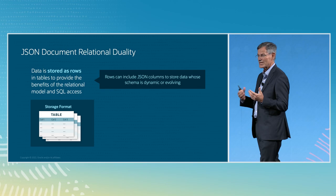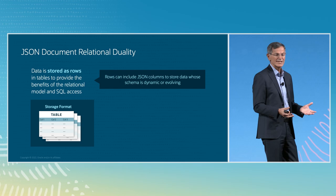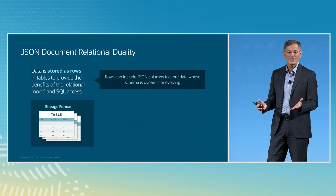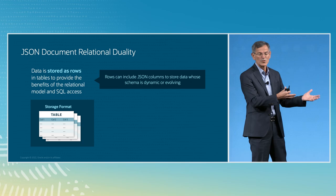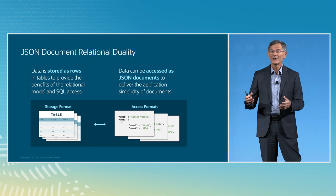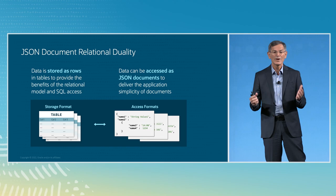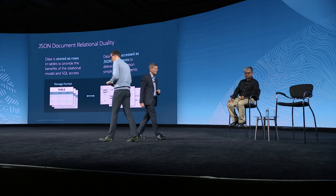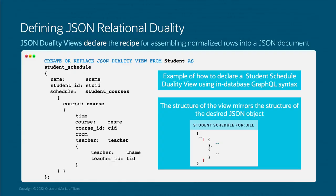How does JSON Relational Duality work? We store data as rows and tables to provide all the benefits of relational. When we store data in tables, we can also include JSON columns for when the schema is dynamic or evolving. And we can access the data using JSON documents to deliver all those application simplicity benefits. You create one or multiple JSON duality views, and each of these views declares the recipe for assembling normalized rows into a JSON document.